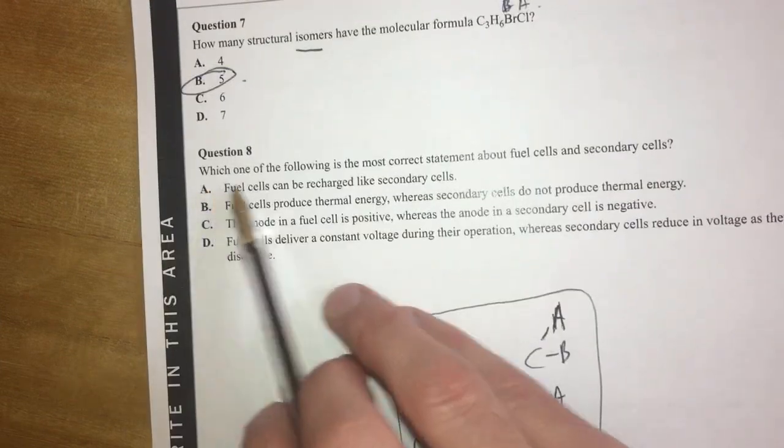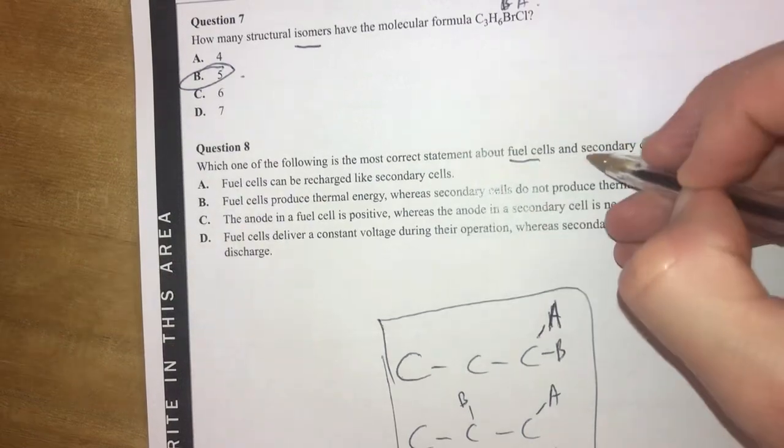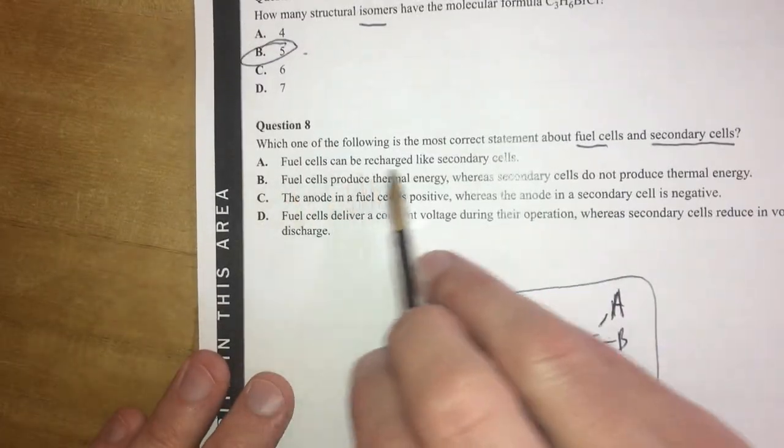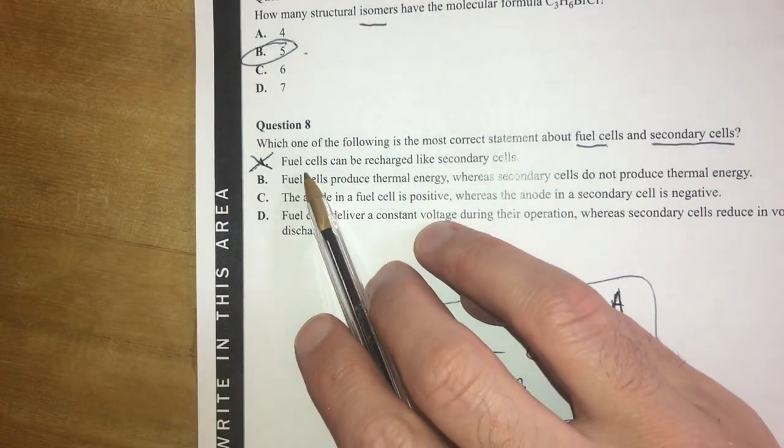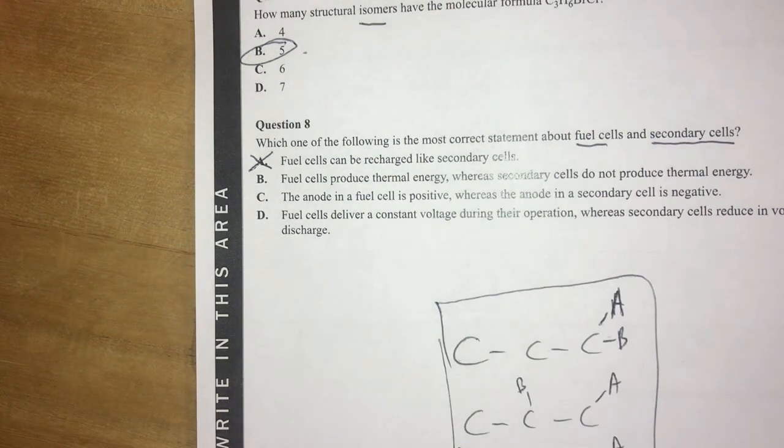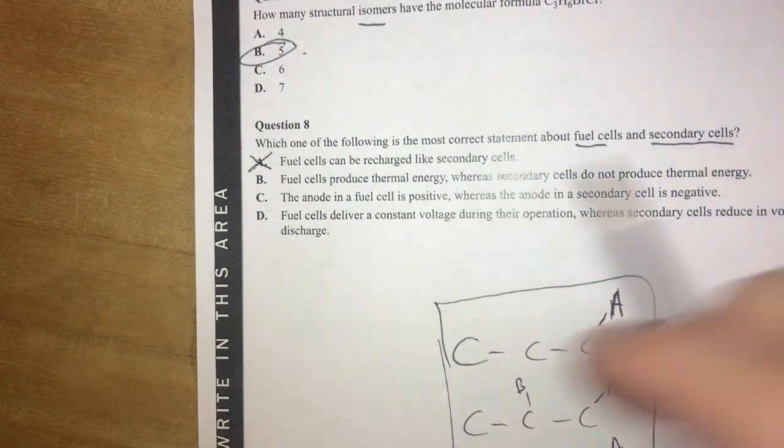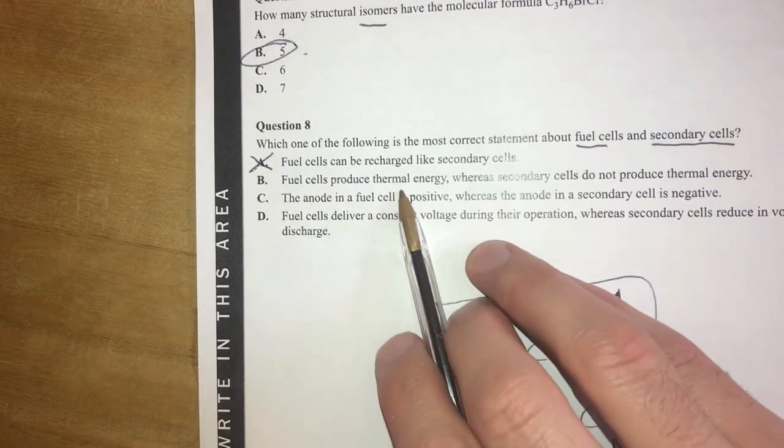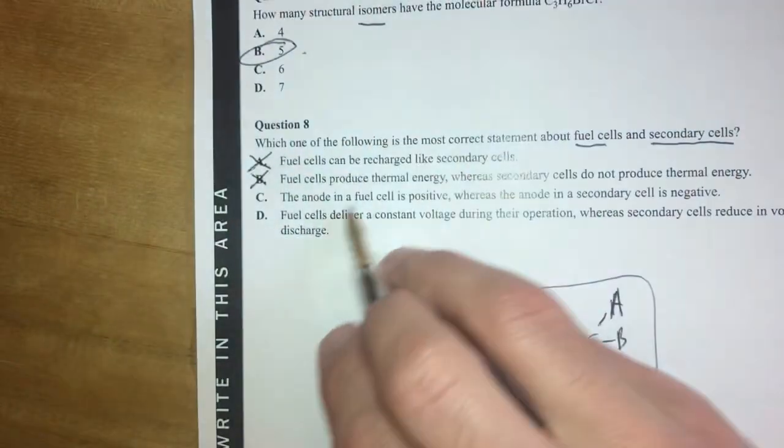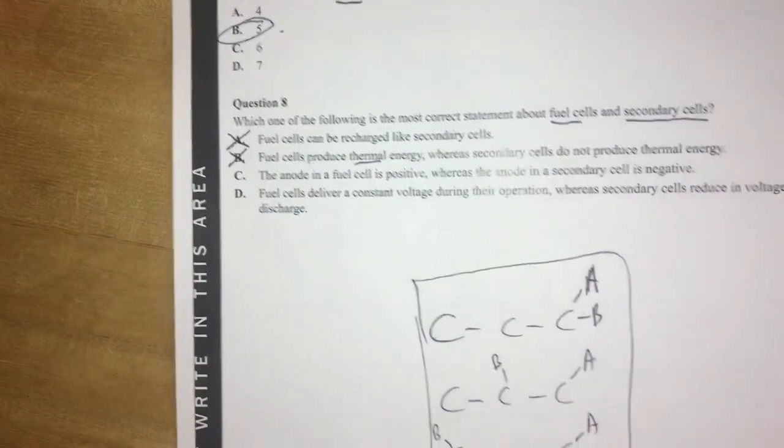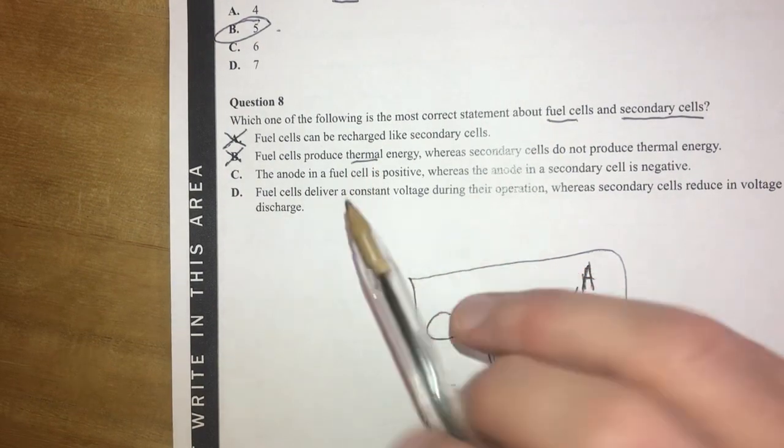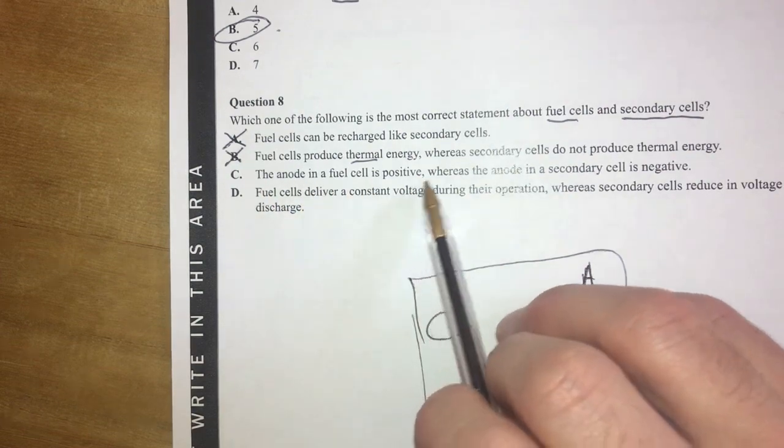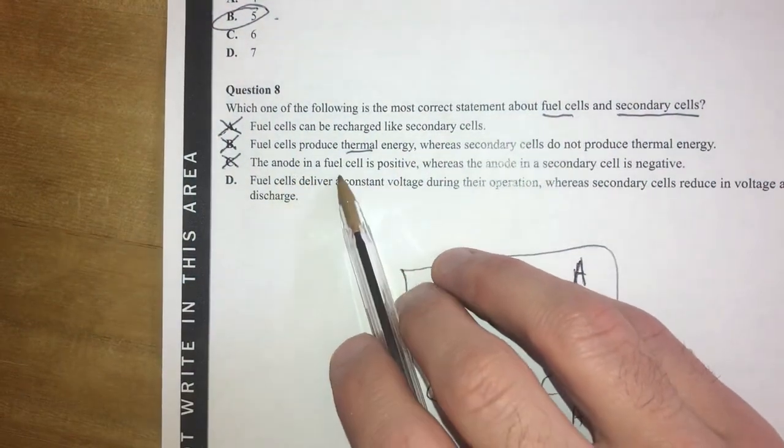Moving on to question eight. Which of the following is the most correct statement about fuel cells and secondary cells? Fuel cells can be recharged like secondary cells. That is not really true. You can refuel a fuel cell, but it's not like recharging. You're not putting electricity into a fuel cell. You're basically just topping up the fuel. So that's not right. Fuel cells produce thermal energy, whereas secondary cells, no. Fuel cells produce electricity. They don't produce thermal energy. All right. They produce some thermal energy, probably, in the way that they work, but that's not the designated energy that they want to produce. The anode in a fuel cell is positive, whereas the anode in a... No, that's not right.